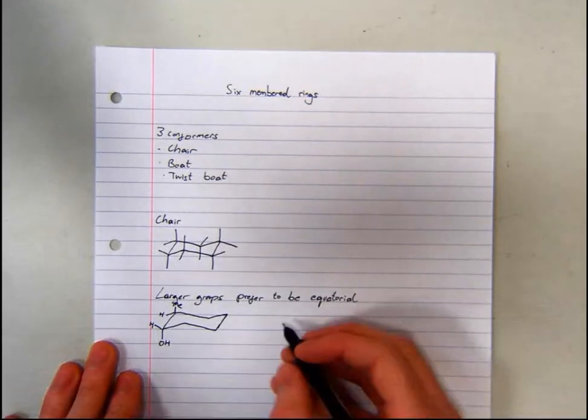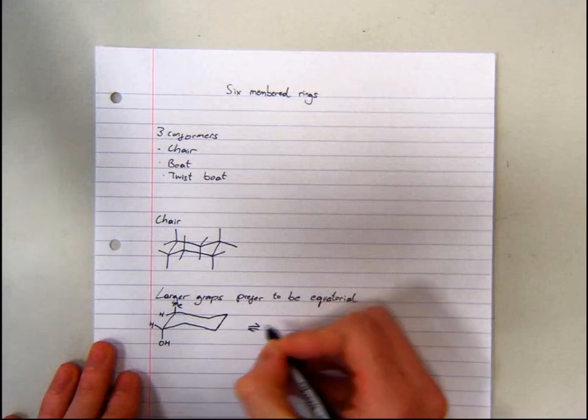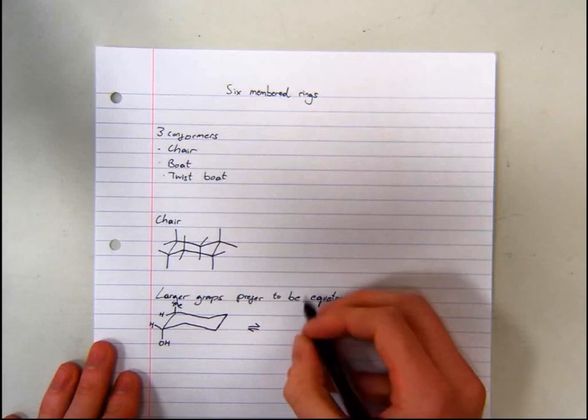This can be inverted by performing a ring flip. This involves drawing the inverted form of the chair.